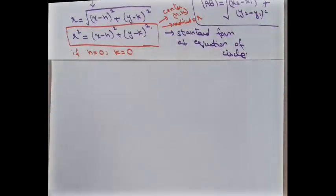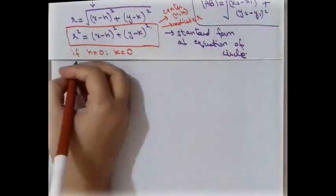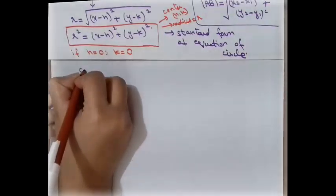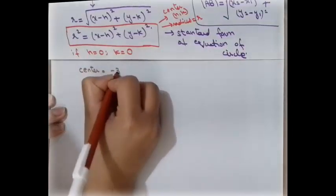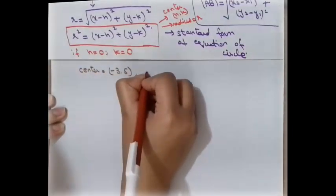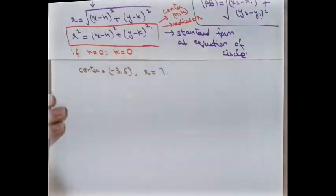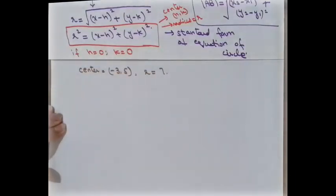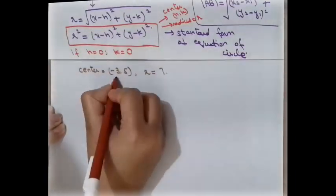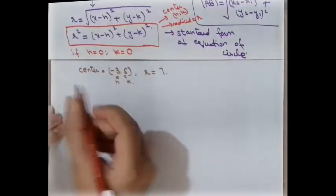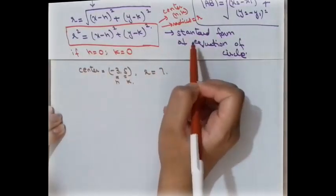Now, if our center is given as (−3, 5) and radius equals 7, we need to find the equation of the circle using this information. Here h = −3 and k = 5, so we substitute these values into the standard form of the equation.